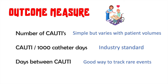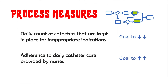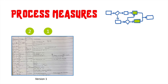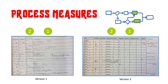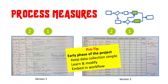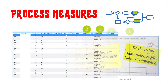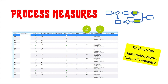Process measures are key proximal steps or interventions that will change this outcome. The ICU team decided on the following process measures: 1. Number of Foley catheters that are kept in place every day for inappropriate indications. 2. Adherence to daily Foley care provided by the nurses. In many cases, a way to track process measures is not readily available. Data collection may start in simple manual ways at the start of the project — you will learn much more this way. You will continue to refine the definition of the measure and then move on to embed the data collection process within the daily workflow. Try to keep it simple. Process measures may change over the course of the project as you test new interventions over time or find new opportunities to improve outcomes.